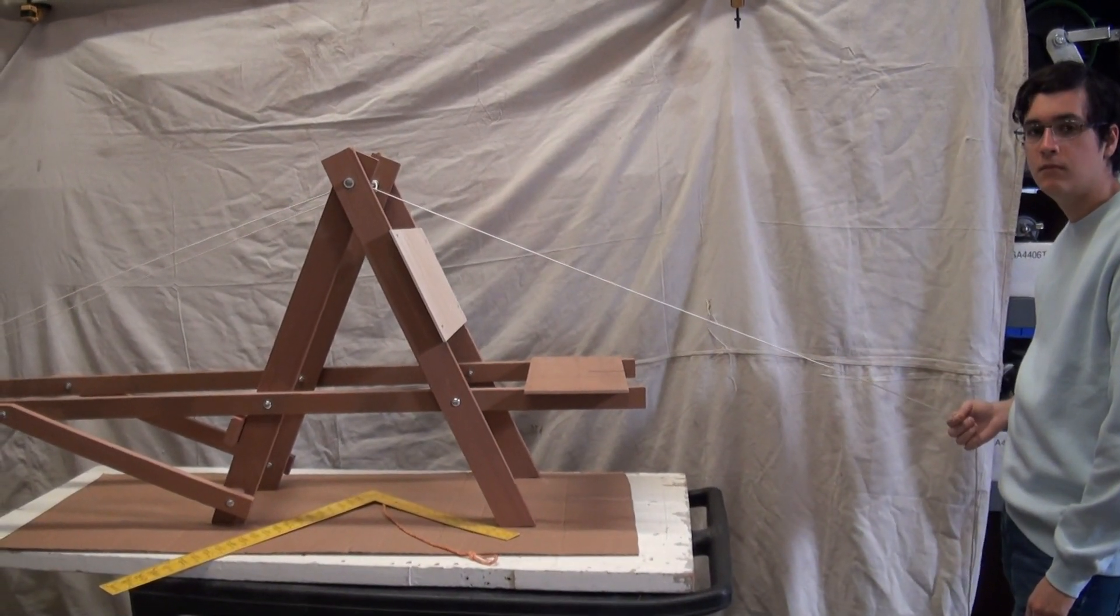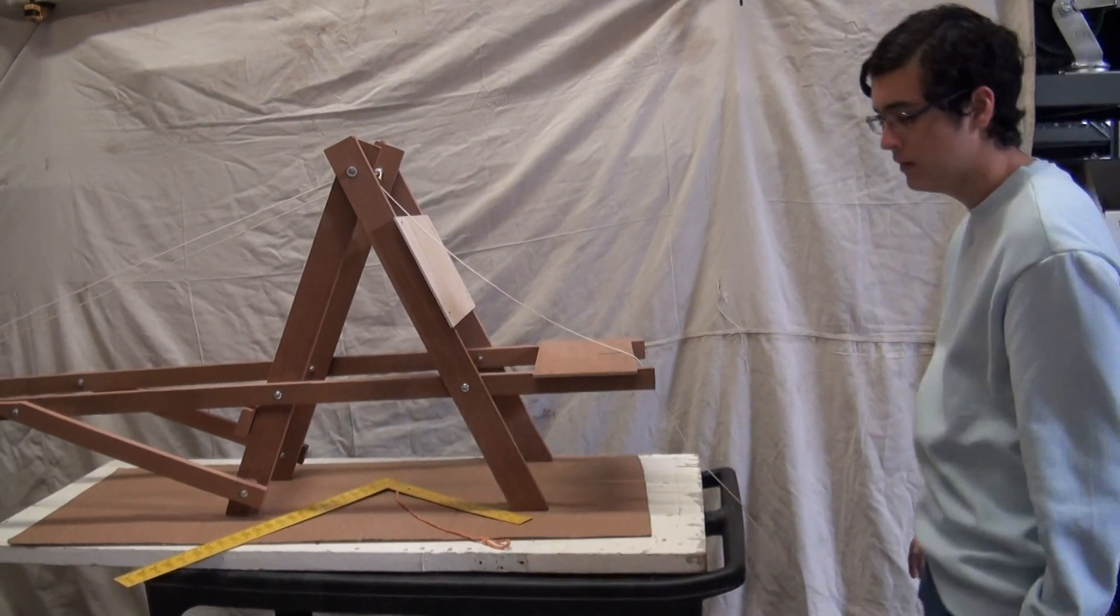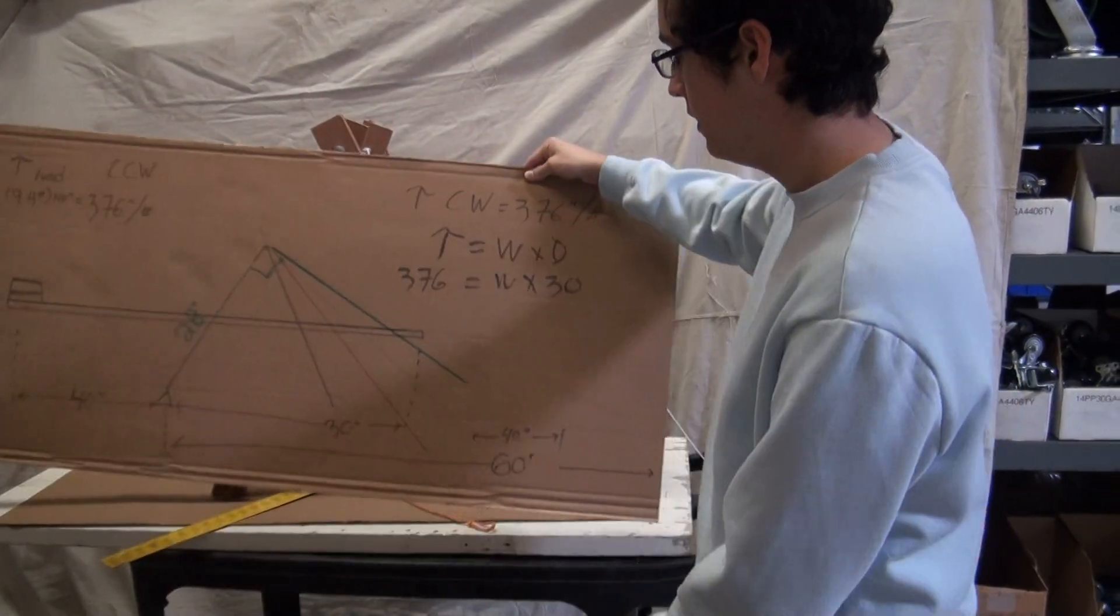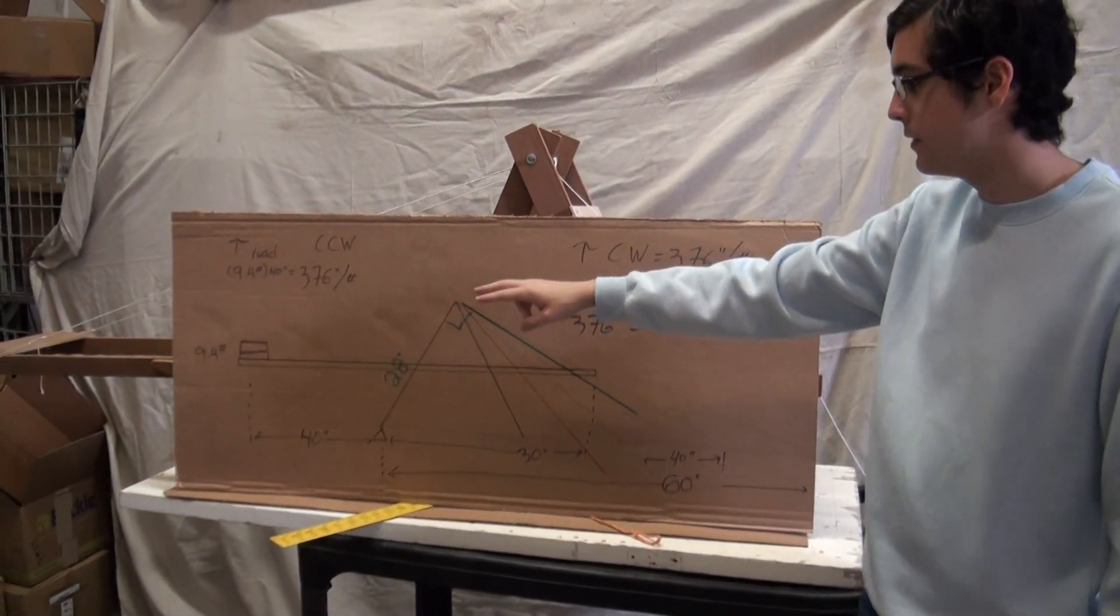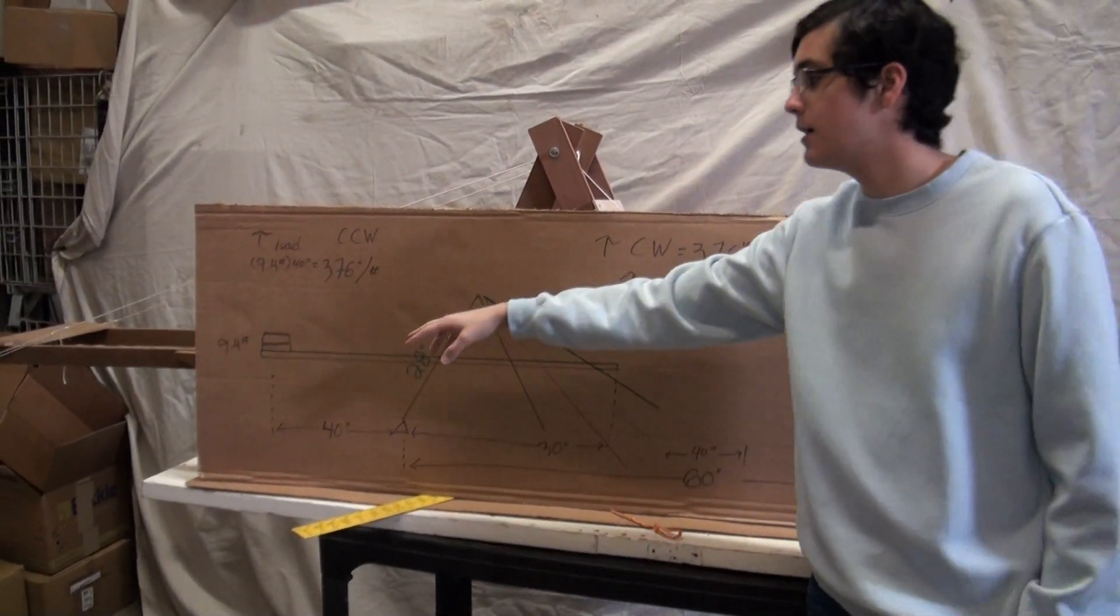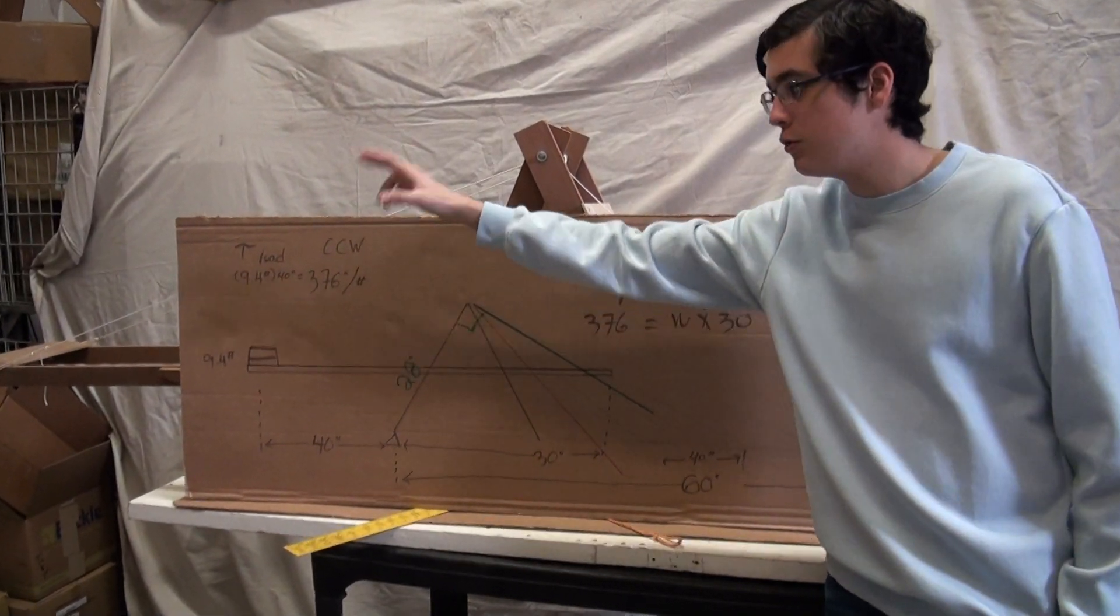Then we've got, let's grab that poster. We'll run the numbers. So we're going to have the same two bricks as our load. 9.4 pounds. And that gets us 376 inch pounds of torque.